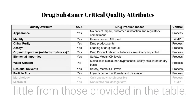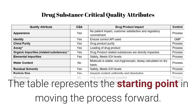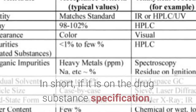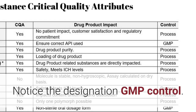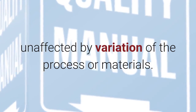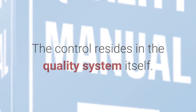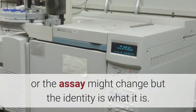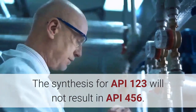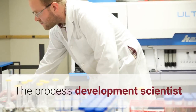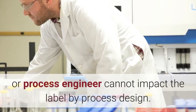The CQAs of the drug substance vary little from those provided in the table. The table represents the starting point in moving the process forward. In short, if it is on the drug substance specification, it will show up as critical. Notice the designation 'GMP control' — quality attributes that are GMP controlled are unaffected by variation of the process or materials; the control resides in the quality system itself. For example, identity cannot be impacted by changes in the process. The purity profile might change or the assay might change, but the identity is what it is — the synthesis for API 123 will not result in API 456. The identity is controlled by ensuring the correct packaging and labels are used.